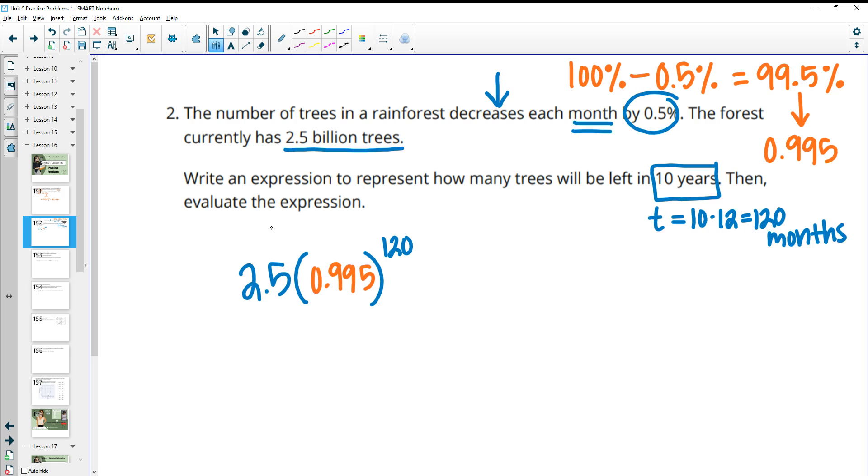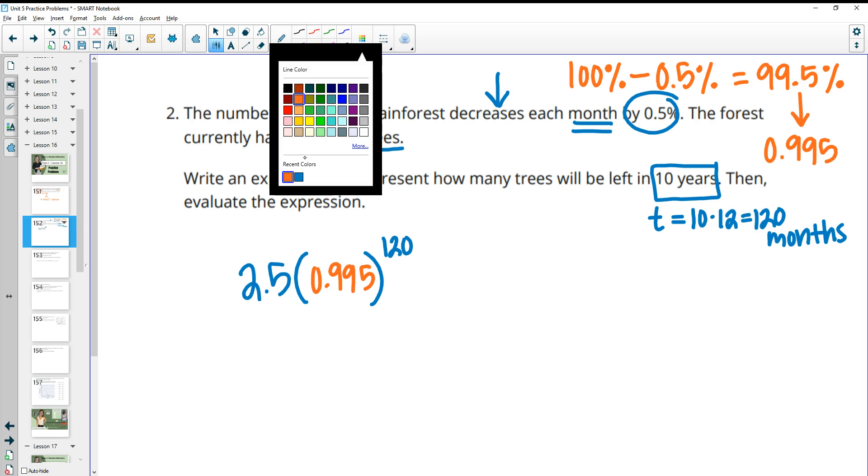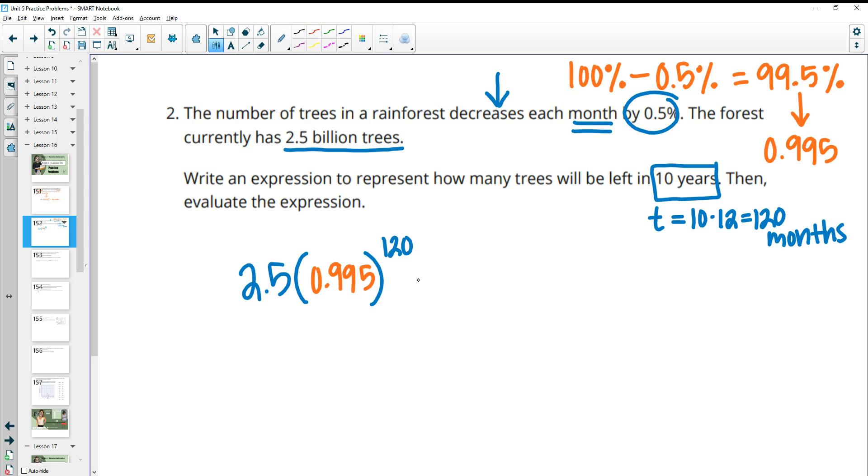Then when we divide this by 100 to write it as a decimal, we get 0.995 as our growth factor. So then that's going to go in here and we will type that into our calculator. We get that we have 1.37 billion. Make sure you write billion because we didn't actually write out the whole number here. So 1.37 billion trees will be remaining at the end of 10 years.